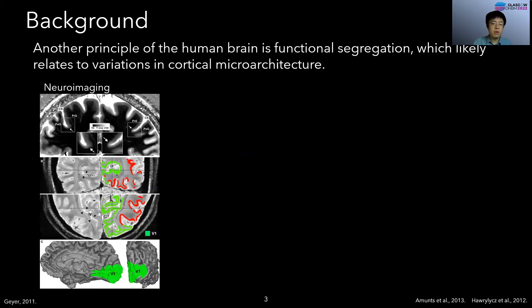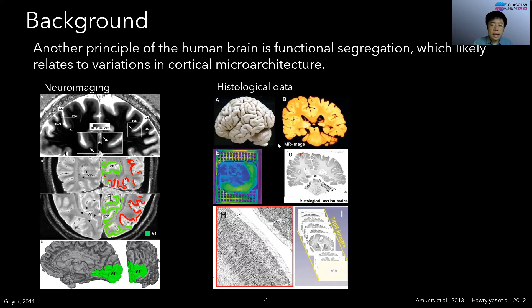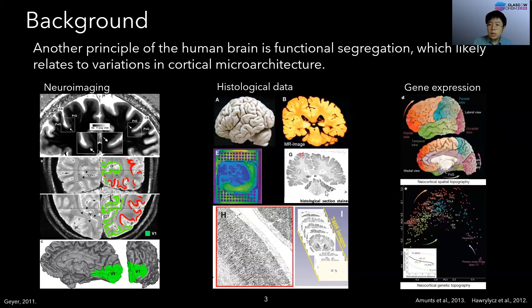Another principle of the human brain is functional segregation, which likely relates to variations in critical microarchitecture. For example, taking advantage of neuroimaging data such as myelin-sensitive MRI, we could approximately assess the patterns of myelination of the cortical membrane. Recent ultra-high resolution three-dimensional models of human cytoarchitecture provide microstructural properties and considerable neuroanatomic insights into the human brain. In addition, gene expression data of the human brain provides molecular level insights into brain organization.